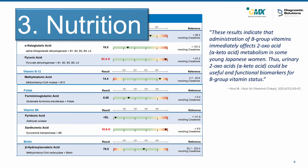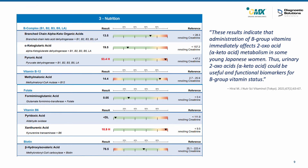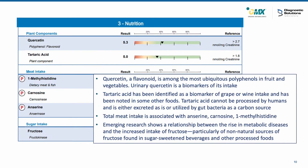Section 3 is nutrition. Here we look at micronutrients and B vitamins. The first section covers B-complex markers — these are the 3-dehydrogenase enzymes that require B-complex markers. We look at B12 and folate. For B6, we look at actual B6 levels with pyridoxic acid and xanthurenic acid, which becomes elevated when B6 need arises. We also look at need for biotin. The second half of the nutrition section looks at markers of intake — components of plant intake, markers of meat intake, and fructose intake.